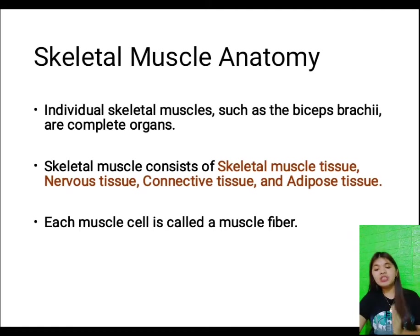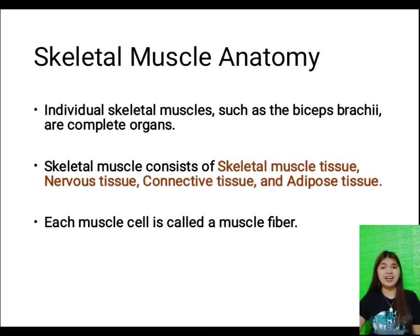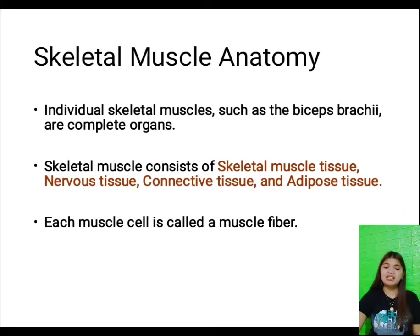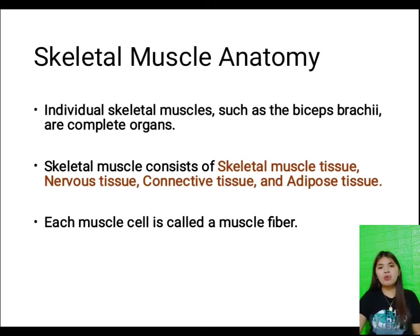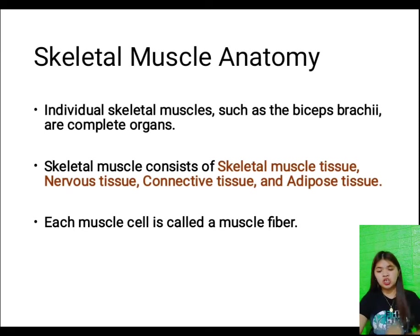Individual skeletal muscles, such as the biceps brachii, are complete organs. Recall from our previous discussions that an organ consists of one or more tissue types that work together for a common function.